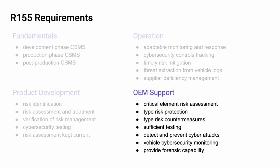The fourth area addresses the support suppliers provide to the OEM. The entire supply chain needs to be supporting the OEM since they are the party being held responsible under R155. Shared activities include critical element risk assessment, type risk protection, risk countermeasures, and sufficiency testing. All suppliers need to ensure that they are doing everything reasonable to detect and prevent cyber attacks. After releasing to their customer, suppliers need to monitor for cybersecurity events and provide the ability to extract forensic information from their logs.